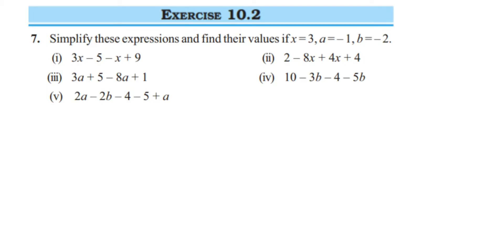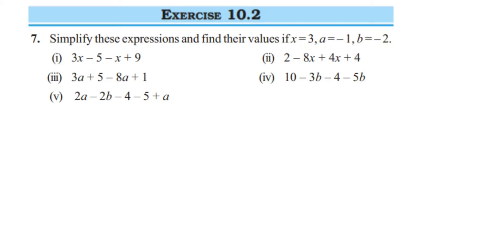Here is a question from Exercise 10.2, 7th question — chapter is Algebraic Expressions of Class 7. The question says: simplify the expression and find the values if x=3, a=-1, and b=-2. We have three different variables x, a, and b. First we have to simplify to reduce the equation, and then substitute the values to find the value of the given expression.